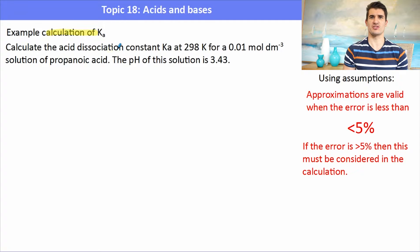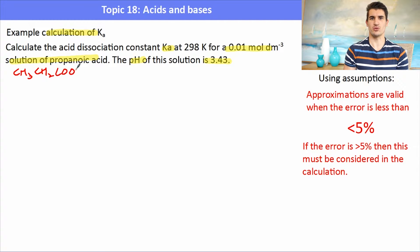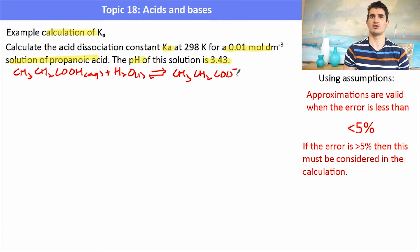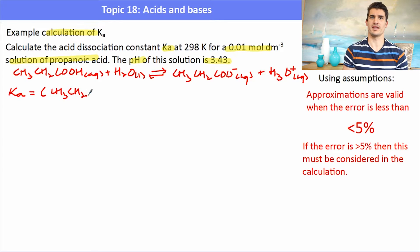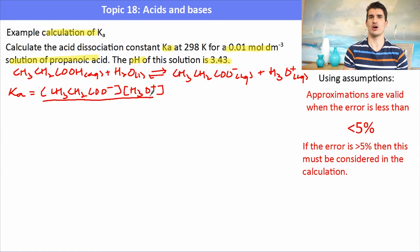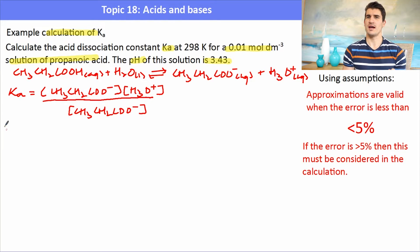Calculate the acid dissociation constant Ka at 298 Kelvin for a solution of propanoic acid. The pH is 3.43. In any question we will be asked to identify our assumptions, but first let's go through the process. The first thing I recommend is writing an ionization expression: propanoic acid ionizes with water to form the CH3CH2COO- anion and H3O+. We can then write our Ka expression as the concentration of CH3CH2COO- multiplied by H3O+ divided by the concentration of propanoic acid.